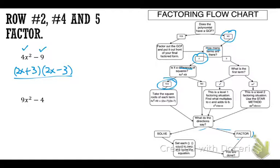So I'm looking for a difference of squares. And yes, because I can square 3x to give me 9x², and I can square 2 to give me 4. So 3x and 2. And so that's how this will factor.